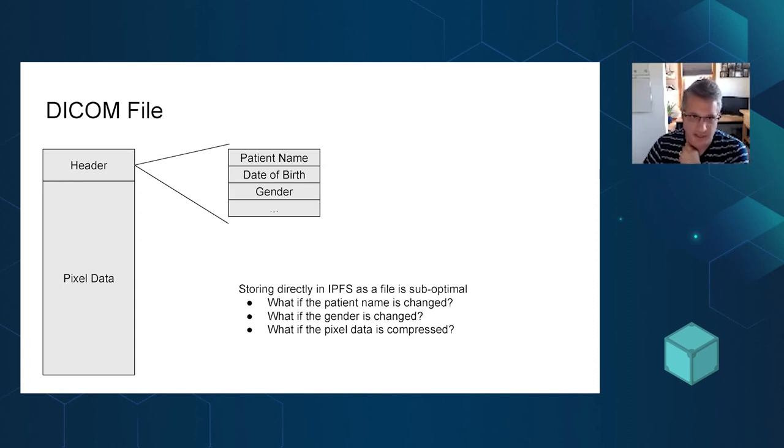And basically what it does is it takes a given image, like a CT scan or an MRI or an X-ray, and it puts it in one file. In the file, at the very beginning are things as a header, which has like patient name, date of birth, gender, and then the pixel data.